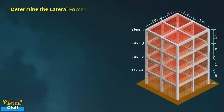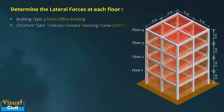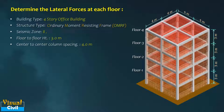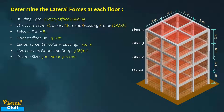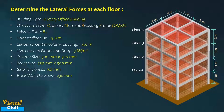Let us consider a four-story office building with ordinary moment-resisting RCC frame structure situated in seismic zone 2. The floor-to-floor height is 3 meters while center-to-center column spacing is 4 meters. The live load intensity at the floors and roof is 3 kilo newton per meter square. The size of column is 300 by 300 mm and that of beam is 230 by 300 mm. The thickness of the slab and the brick wall is 150 mm and 230 mm respectively.